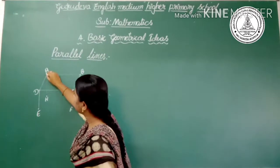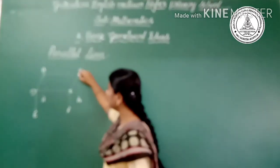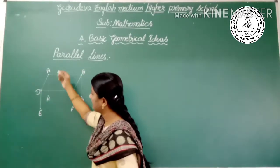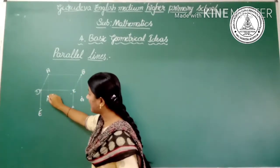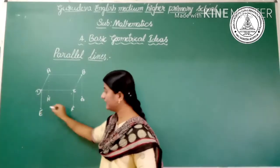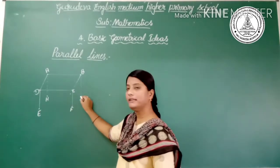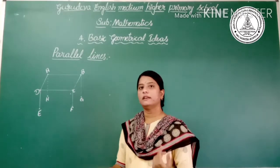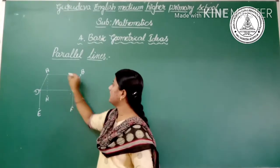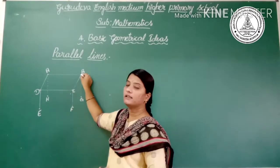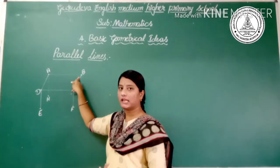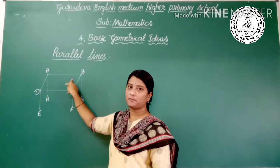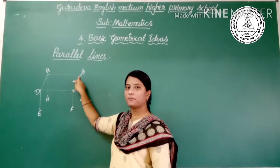Here we can see point A, point B, point C, point D, point H, point E, point F, and point G. Are you able to identify the line segments? Here AB is one of the edges of the table — it has two ends, so it is a line segment. AB is a line segment, and BC has two end points, so it is also a line segment.